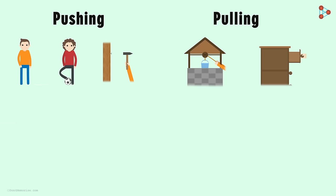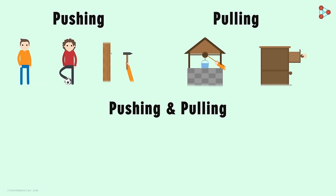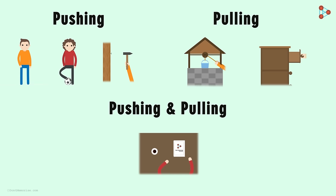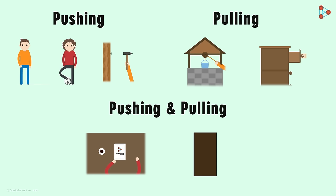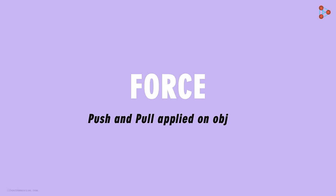Are there any actions that can be described under both? Yes, there are. Suppose there is a book on the table — you can either pull it towards you or push it away from you. So moving an object can be described under both. Similarly, opening or shutting a door can be thought of as both. So we can safely say that forces are nothing but the push or pull applied on objects.